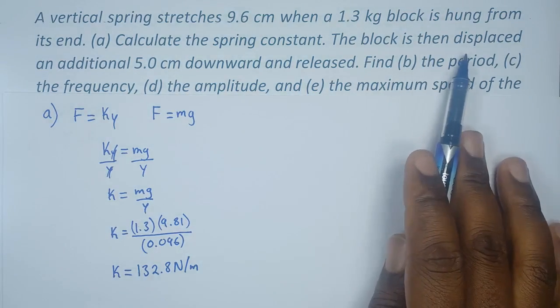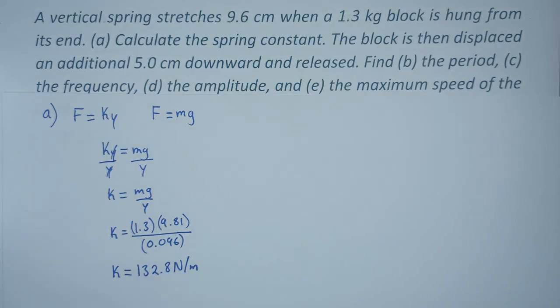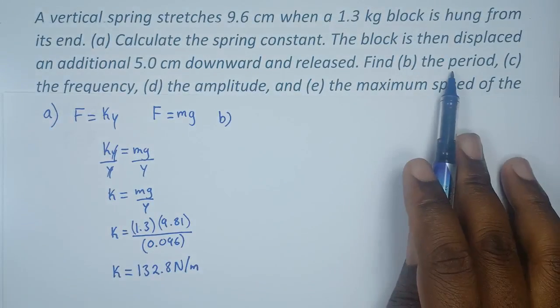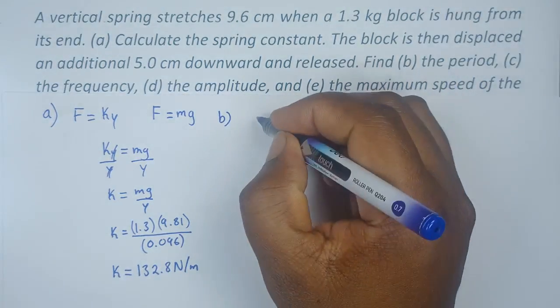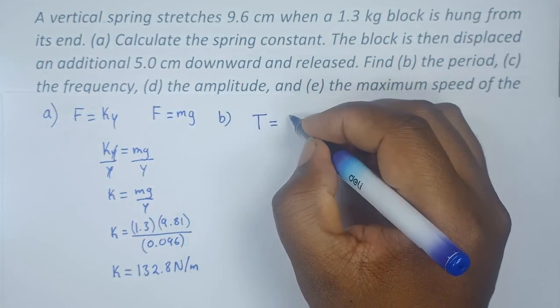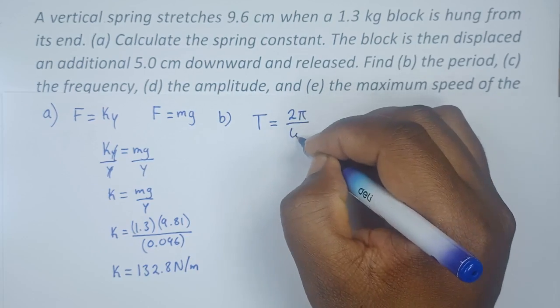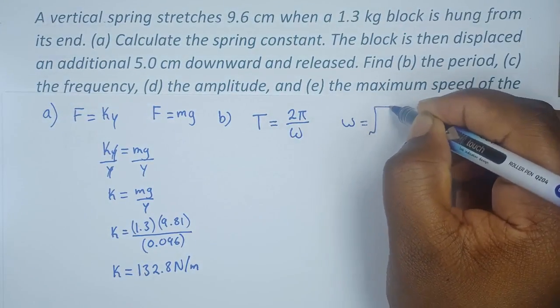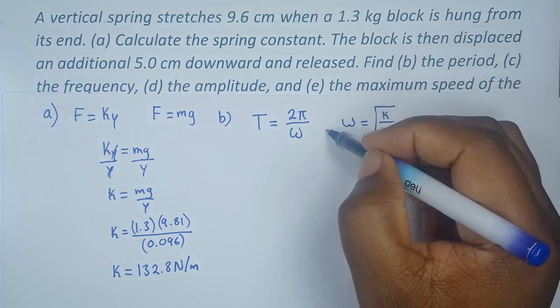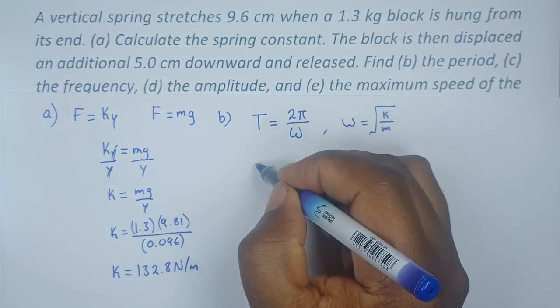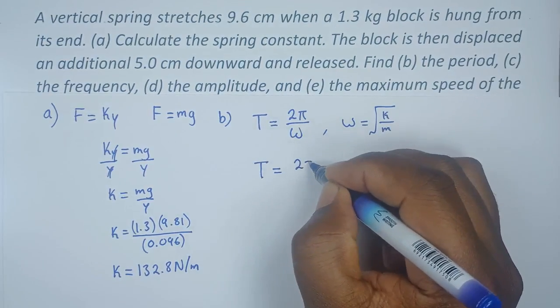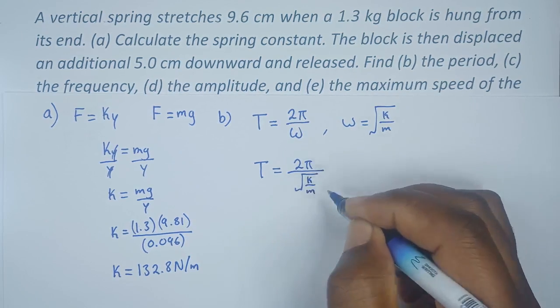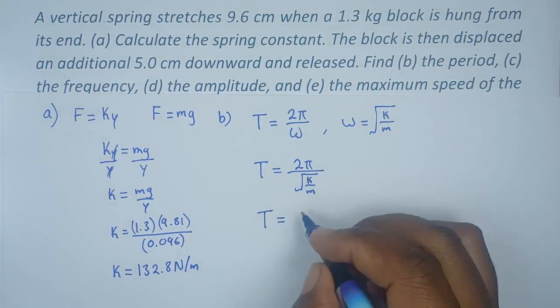Question b requires us to calculate the period. The block is then displaced by an additional 5 centimeters downward and released. We know that period is given by 2π over angular frequency ω, and ω is the square root of k over m. So period equals 2π times the square root of m over k.